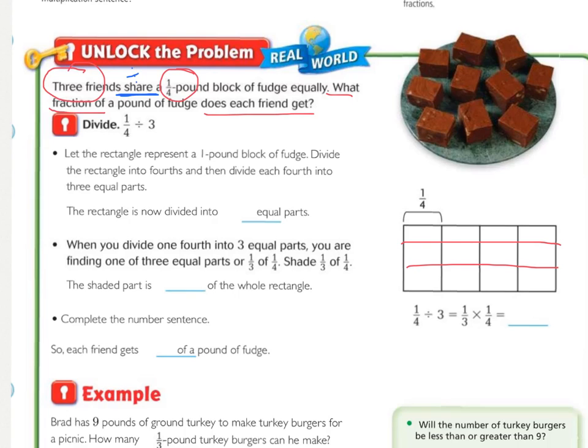So how many parts are there altogether? Well, that's a 4 by a 3, so that means that there are now 12 parts in that whole rectangle. So when you divide 1/4 into 3 equal parts, you are finding 1 of 3 equal parts, or 1/3 of 1/4. So now we're going to shade in 1/3 of 1/4. So now we're only worried about this one block, and we're only going to shade in one part of that. So the one shaded square of the blue, what is that fractional part of the entire square? Well, we only shaded in one, and how many are there total? There's 1/12.